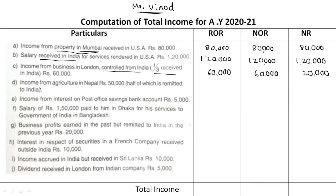Point D: Income from agriculture in Nepal, Rs. 50,000, half of which is remitted to India. Indian agriculture is exempted, but this is foreign agriculture income, so it is taxable. Note that remitted is different from received — remitted means sent from Nepal and received in India. Rs. 50,000 is taxable in case of ROR.